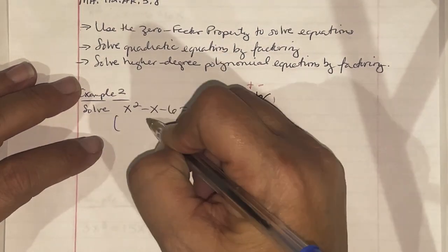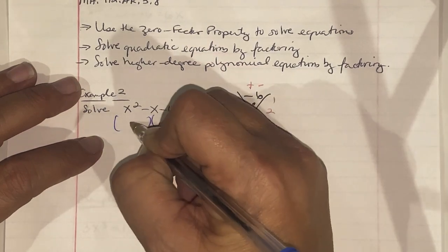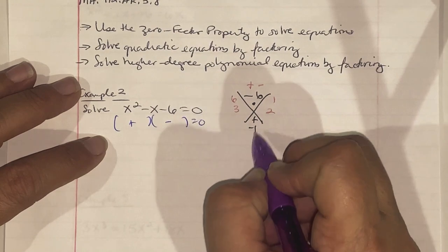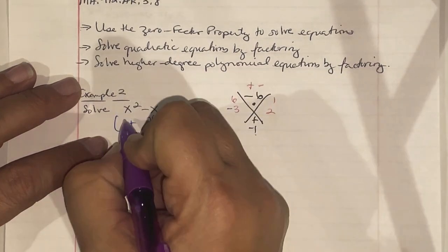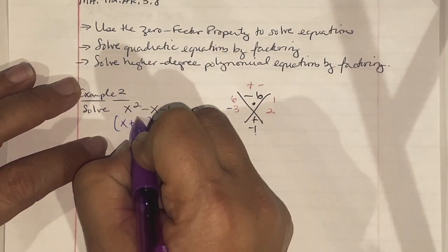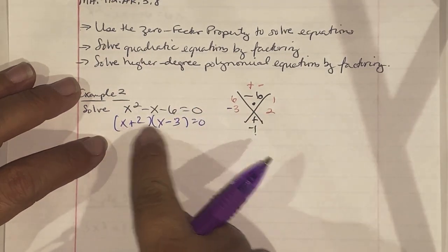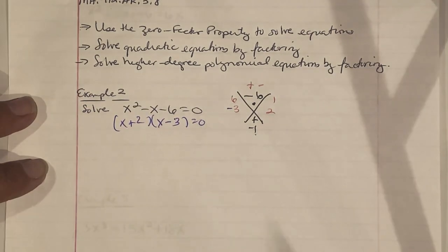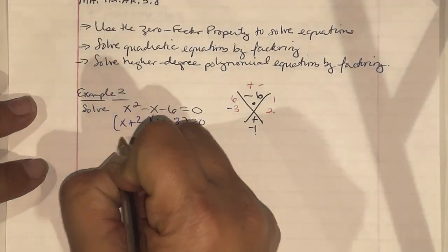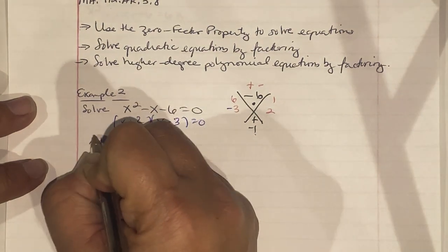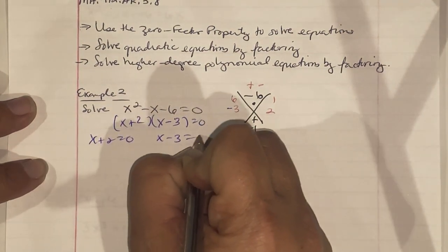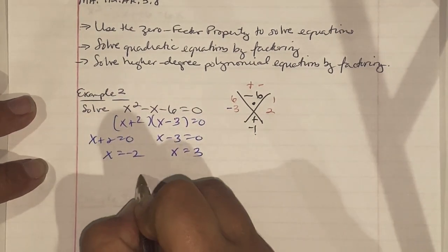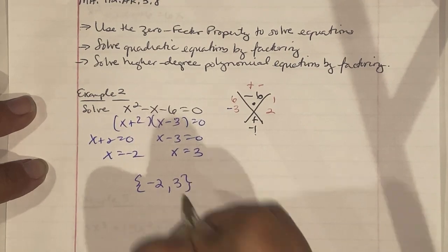I know off the bat there will be a plus/minus situation. In order to get negative 1, the 3 had to be negative. So I write (x + 2)(x - 3): 3 times 2 is negative 6, and 2 plus negative 3 equals negative 1. Setting each factor equal to zero: x + 2 = 0 gives x = -2, and x - 3 = 0 gives x = 3. Our answers are {-2, 3}.